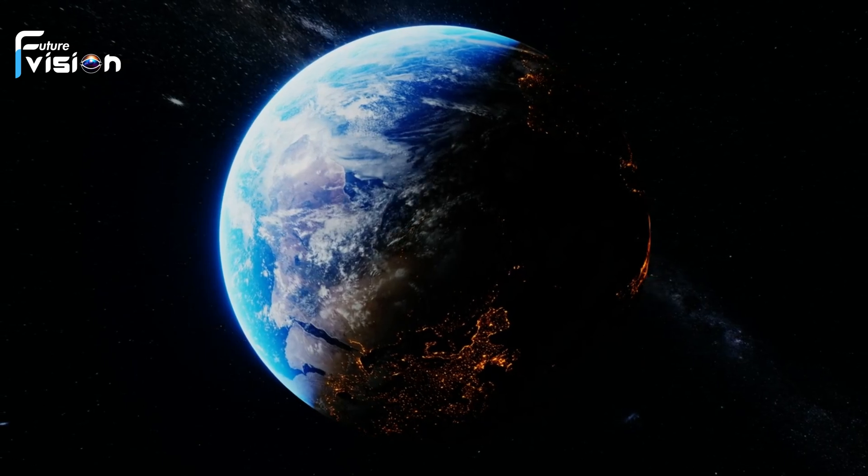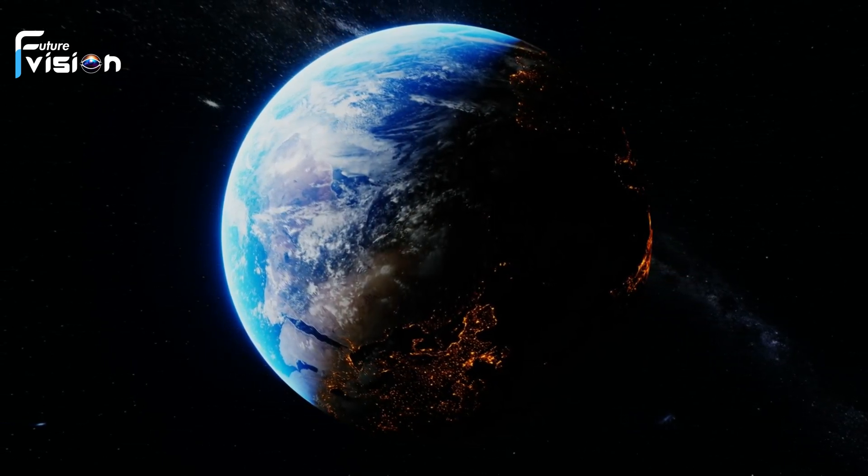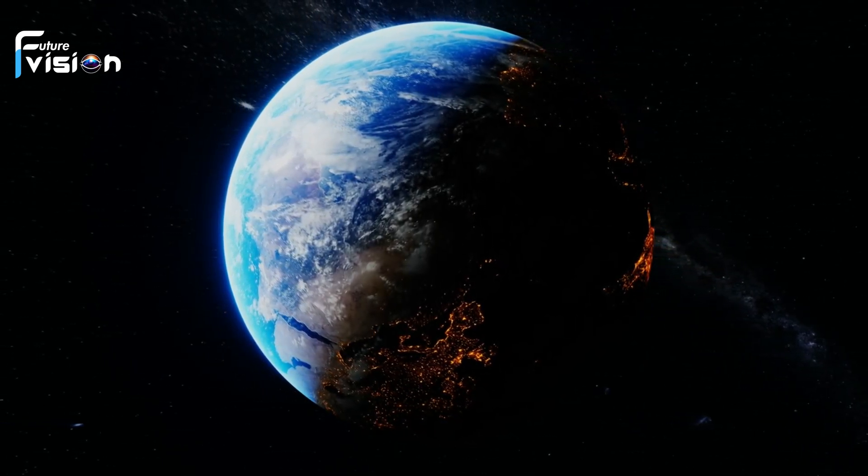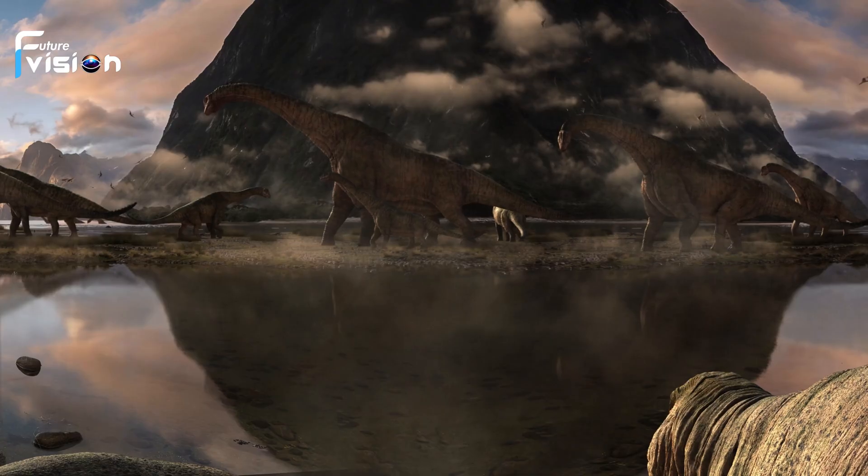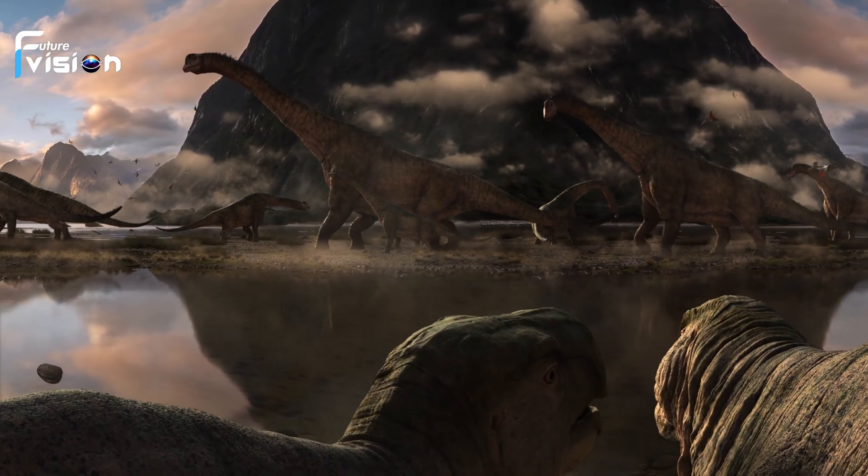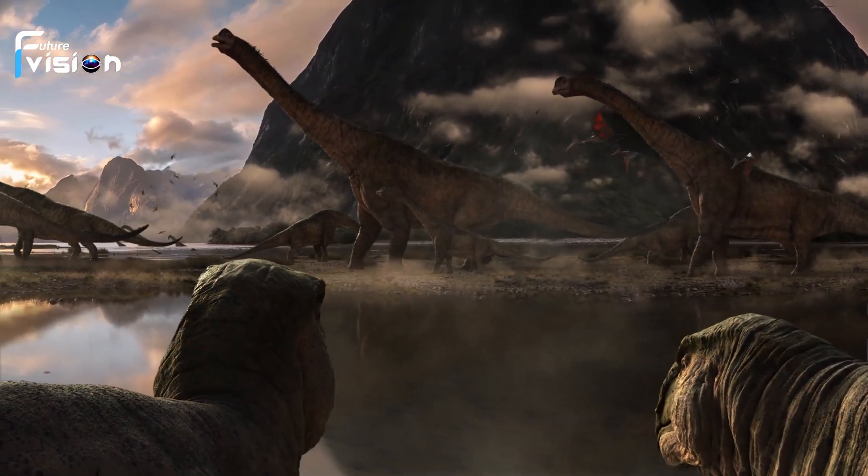Over eons, life diversified and adapted to various environments, from the depths of the ocean to the heights of the mountains. Each species played a role in shaping Earth's ecosystems, and ecosystems in turn shaped the evolution of life.